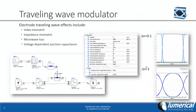A number of new compact models have also been introduced into Interconnect. This includes a new traveling wave electrode, which can account for effects such as the index mismatch, as well as microwave losses and impedance mismatch.